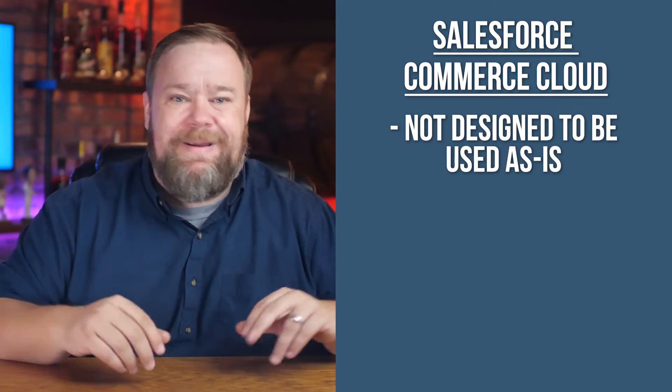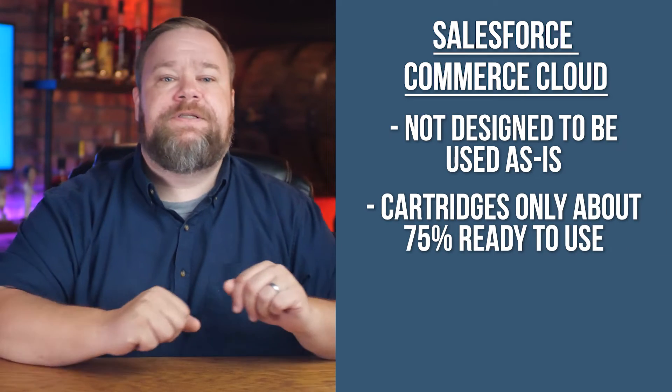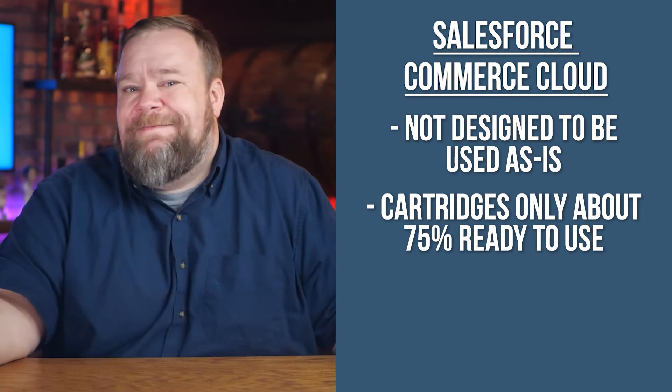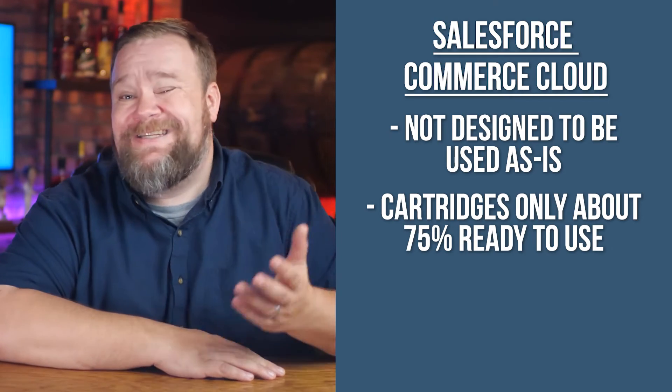With everything being kind of a reference implementation, I hear that a lot of their modules — or cartridges as they call them — are really only about 75% ready to use out of the box and require a lot of customization to get working. That may be fine if you want to custom tailor everything, but it can also slow down your implementation and cost you more if you don't. To me, the clear winner in the third-party ecosystem is Adobe Commerce, and third-party support is one of the most important factors you should consider when evaluating platforms.